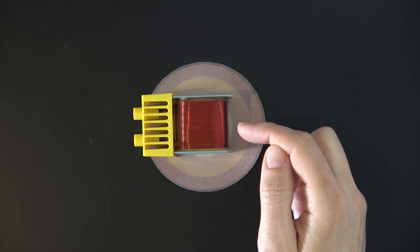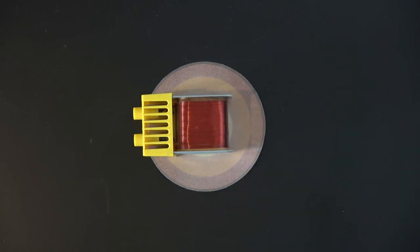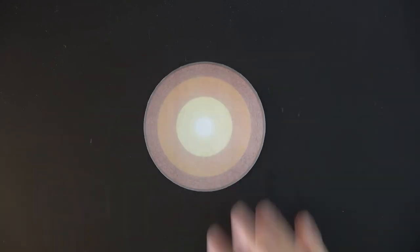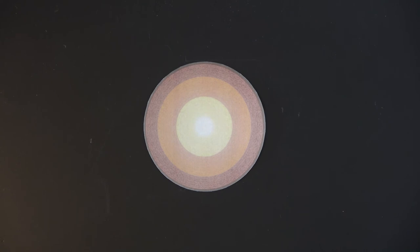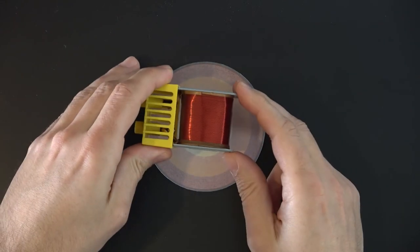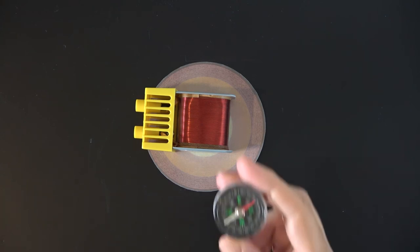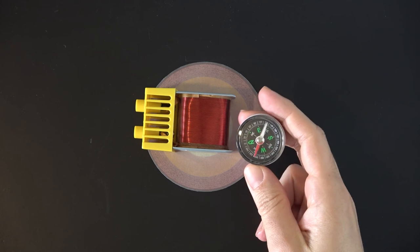What can of course happen is that at some point the currents no longer flow so nicely that a closed magnetic field results. That has happened several times in the history of the Earth. Then the magnetic field has actually collapsed. The Earth was then exposed to cosmic rays without protection. And then, of course, it can also happen that the magnetic field reverses its polarity. We have had this before, too, but it only happens every 100,000 years. Then the compass needle suddenly points with the North Pole down.